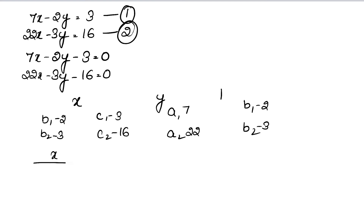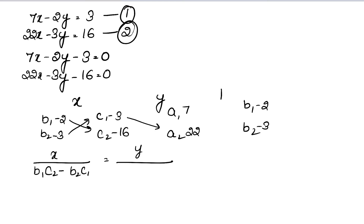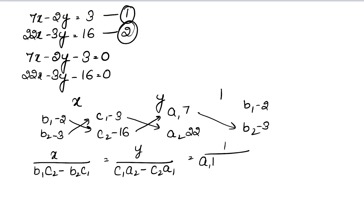The formula is: x upon (B1 into C2 minus B2 into C1) equals y upon (C1 into A2 minus C2 into A1) equals 1 upon (A1 into B2 minus A2 into B1).